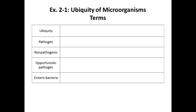What does ubiquity mean? Found just about everywhere. So where can you find microorganisms? Everywhere. This lab is titled 'Ubiquity of Microorganisms' — we're going to find them in the air, on our hands, on our desktop, our cell phone, in our mouth, our nose. All these plates are going to grow. Which plates do we hope don't grow? Our negative controls.